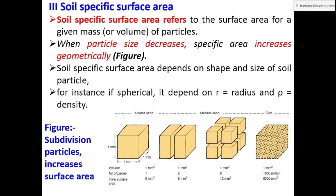Now, soil specific surface area. Soil specific surface area refers to the surface area for a given mass of particles. When particle size decreases, specific area increases geometrically.